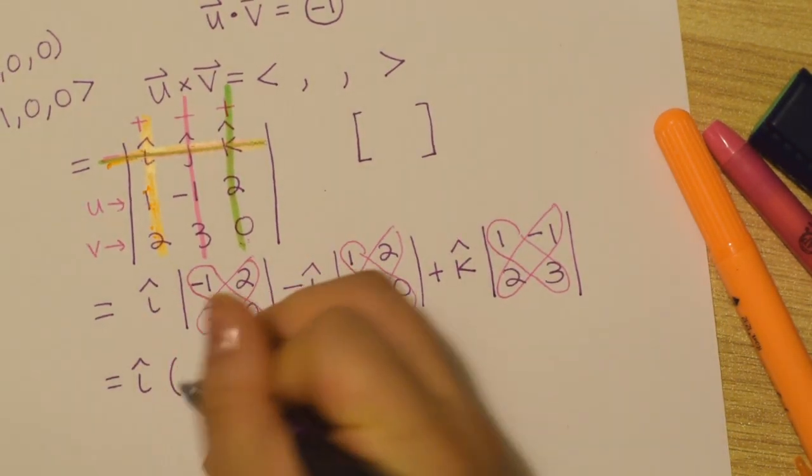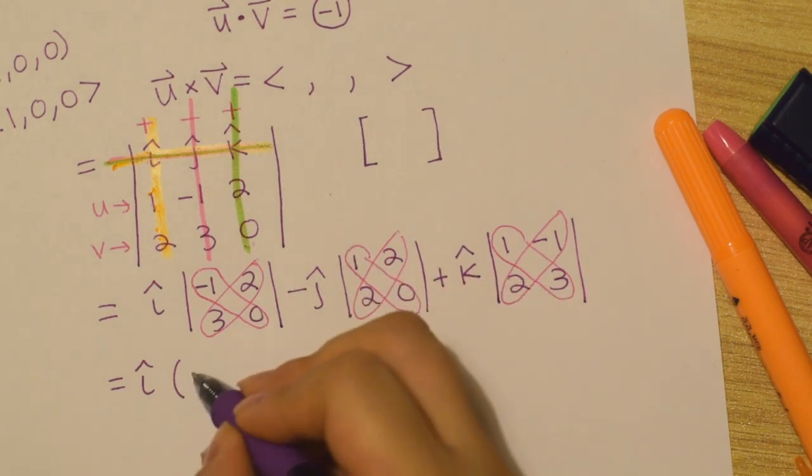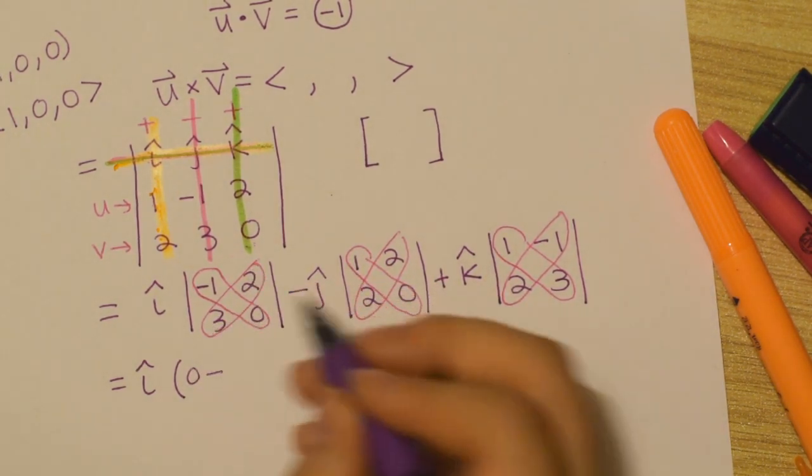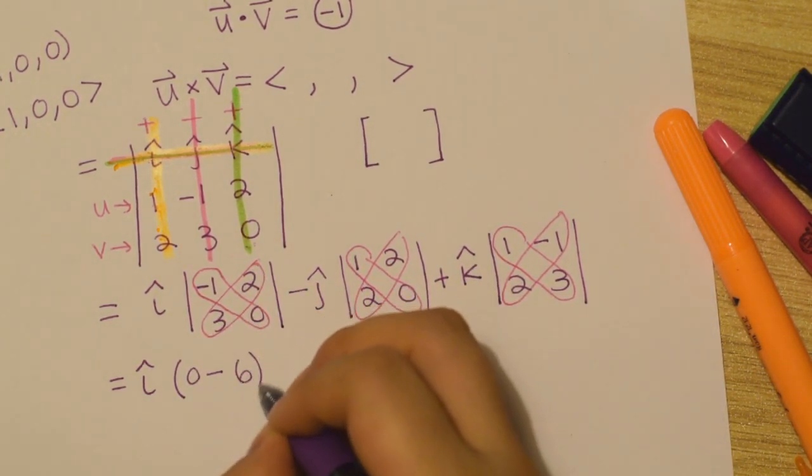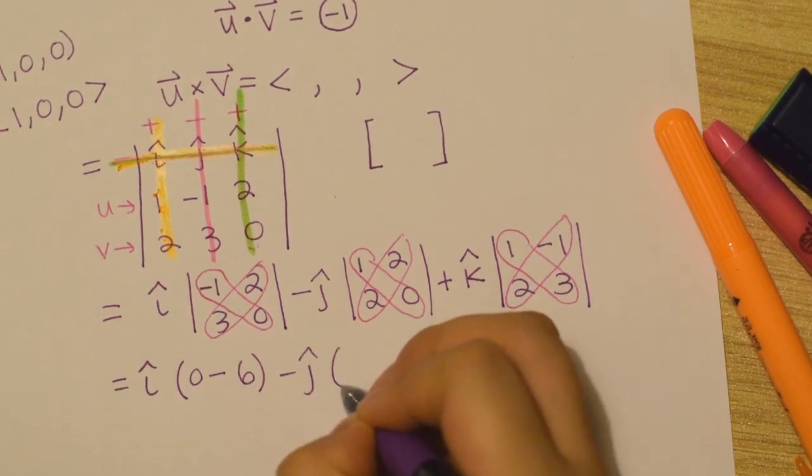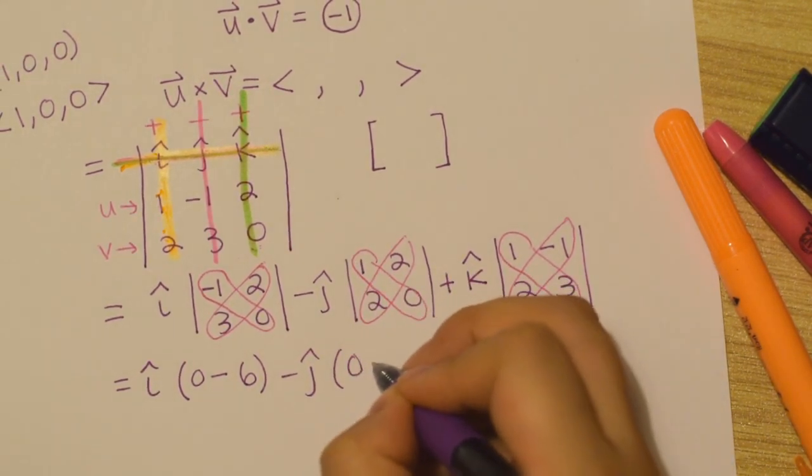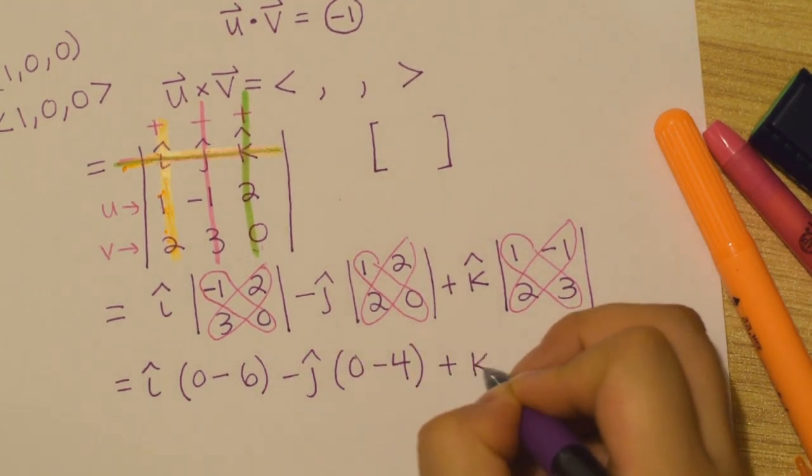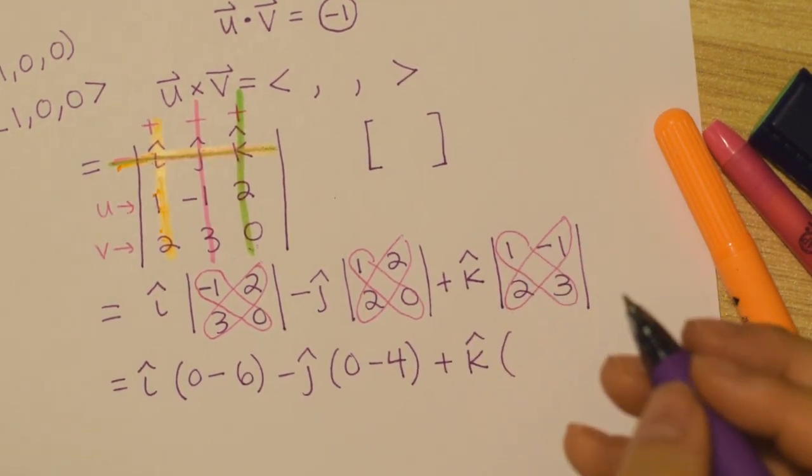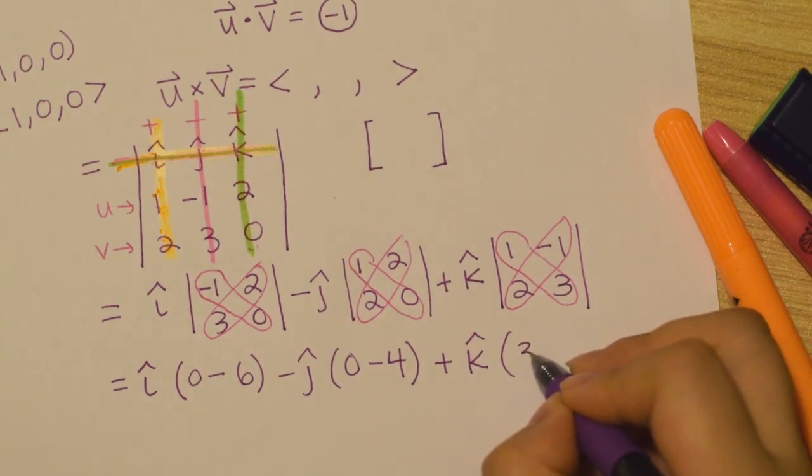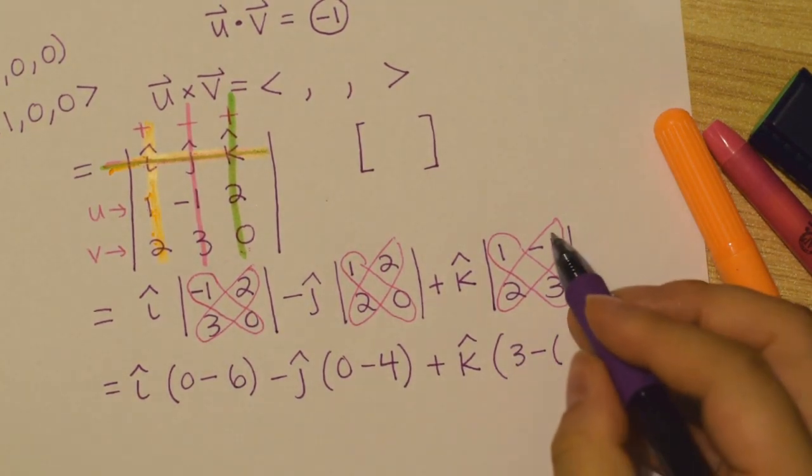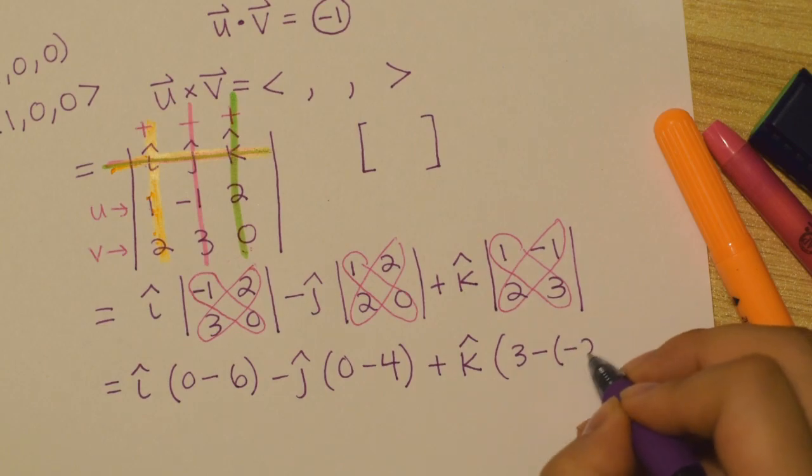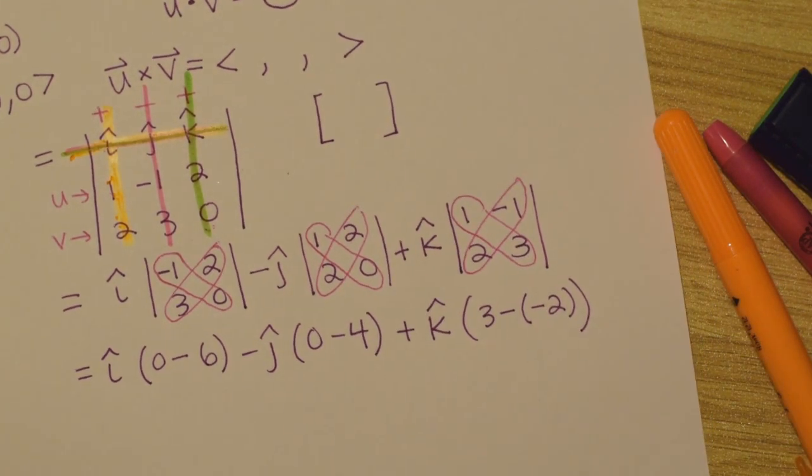We have our i hat times negative 1 times 0 is 0 minus 2 times 3 is 6. Very nice. Minus j hat. 1 times 0 is 0 minus 2 times 2 is 4. Very nice. Plus k hat. 1 times 3 is 3 minus negative 1 times 2 is negative 2. Awesome.